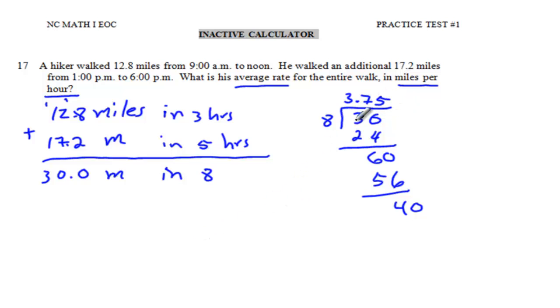You're dividing the 30 miles in 8 hours, which means you will have 3.75 miles per hour. So this hiker walked 3.75 miles per hour. Great job, thank you.